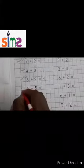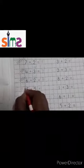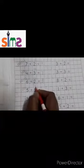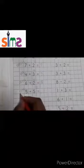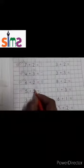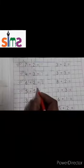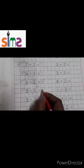Five: one, two, three, four, five. Five: one, two, three, four, five. Count all the lines: one, two, three, four, five, six, seven, eight, nine, ten. So five plus five is equal to ten.